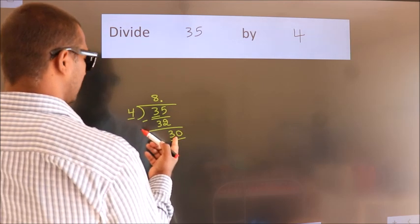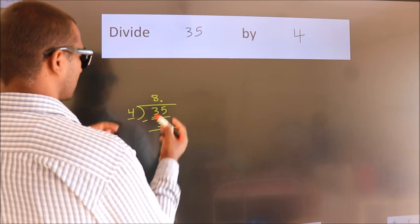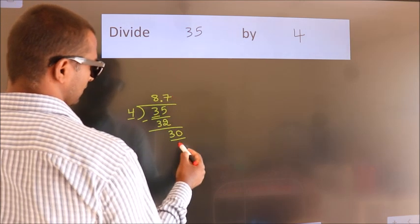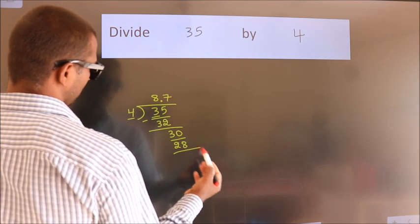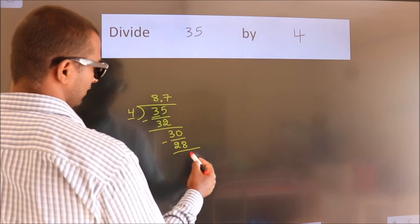A number close to 30 in the 4 times table is 4 times 7 equals 28. Now we subtract. We get 2.